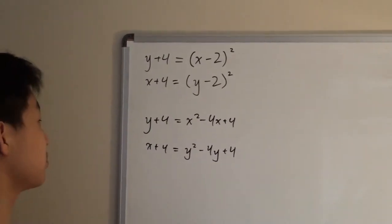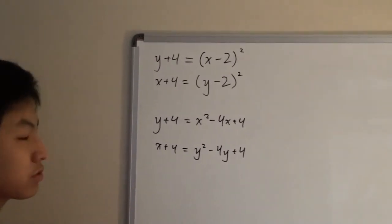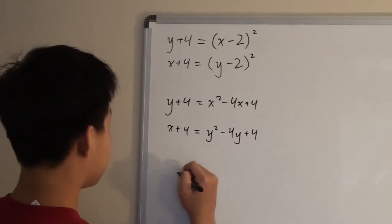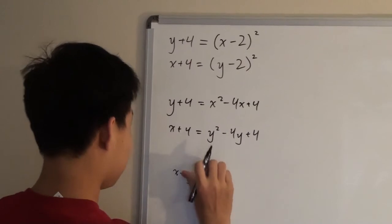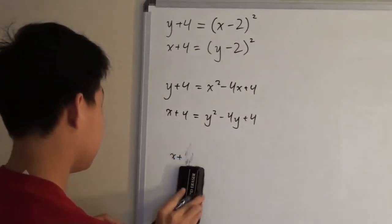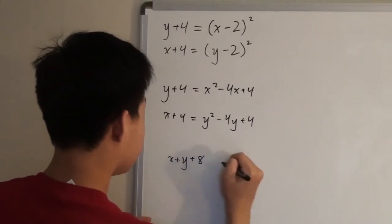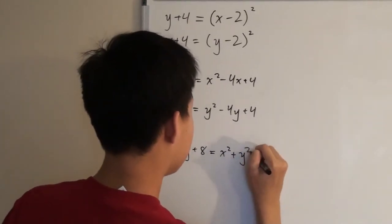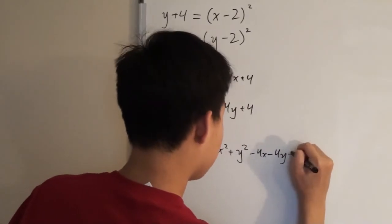Now we can do two things, we can either add them or subtract them. So first we are going to start off by adding them, and you would get x plus y plus 8 equals x squared plus y squared minus 4x minus 4y plus 8.